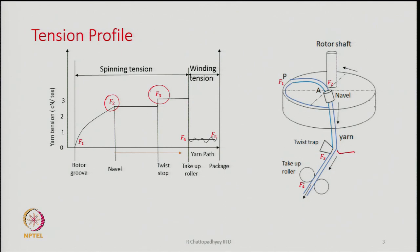From F3, as the yarn moves beyond the take-up roller, there is a sudden drop in tension. Between the take-up roller and the package, the tension remains fairly constant, close to F4. F4 and F5 are practically the same. So the tension in the yarn rises from almost 0 at the rotor groove to a higher level in two steps, then falls depending upon the speed of the take-up roller, and beyond the take-up roller the tension falls a lot.